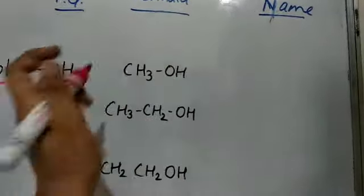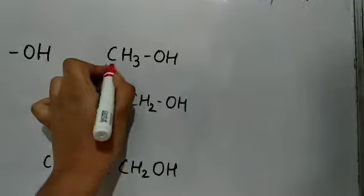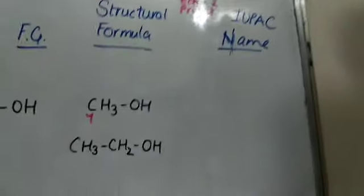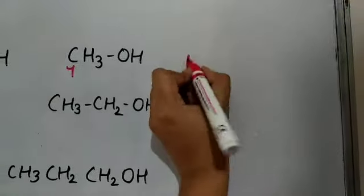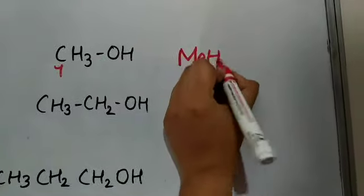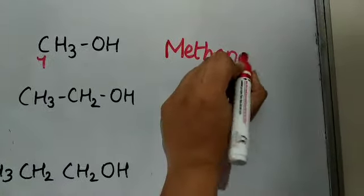CH3OH. How many C? One. One means meth. So what will this be? Methanol. Okay?